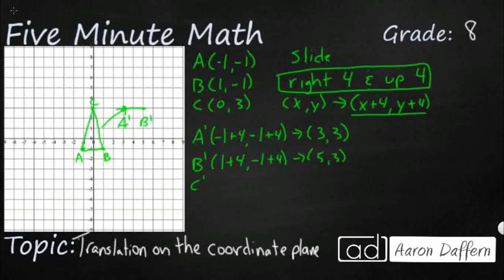And then my C prime is going to be 0 plus 4. And then 3 plus 4, that's pretty easy. That's going to be 4, 7. So there's my 4, there's my 7, and there's my C prime. So that's how we slide it up there. We just do a little addition or subtraction based on the rule.